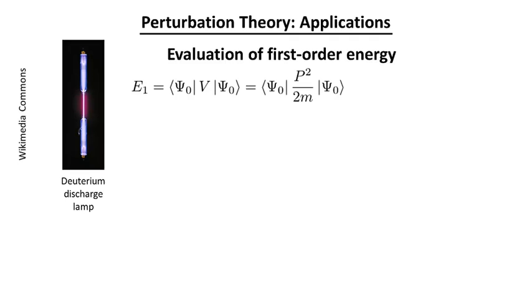So we have available to us the E0 and the psi 0 can be obtained by solving the infinite mass equation. So now we are to evaluate the first-order energy. And so there it is. It's the nuclear kinetic energy evaluated over an electronic wave function. How are we going to handle that?